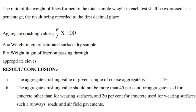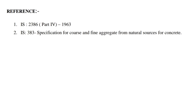Result and Conclusion: The aggregate crossing value of the given sample of coarse aggregate is recorded. The aggregate crossing value should not be more than 45% for aggregate used for concrete other than for wearing surfaces, and 30% for concrete used for wearing surfaces such as runways, roads, and air-field pavements. References: IS-2386-Part 4-1963; IS-383 specification for coarse and fine aggregate from natural sources for concrete.